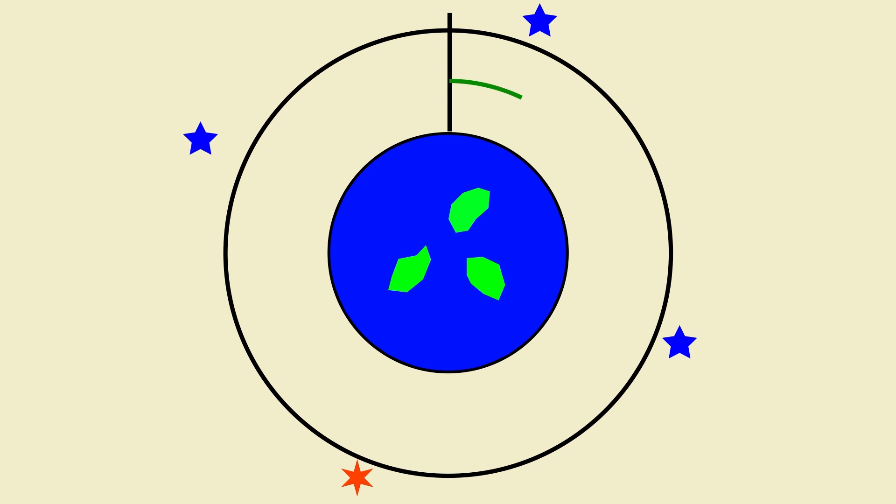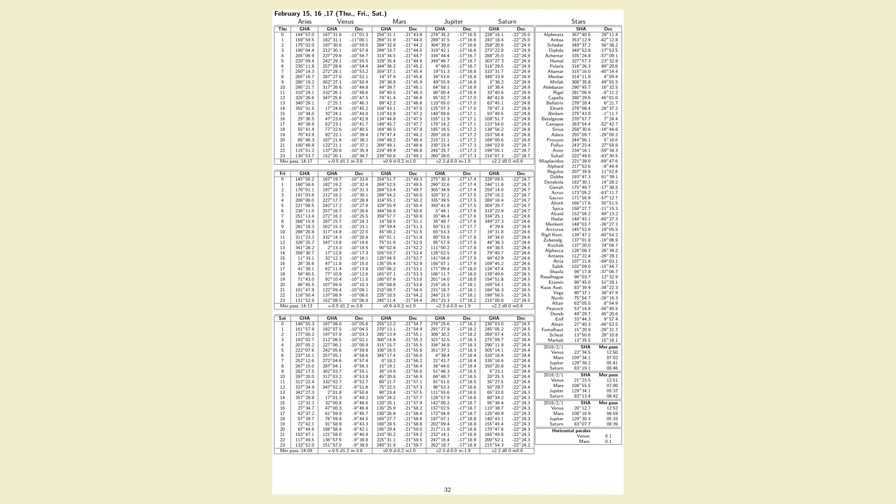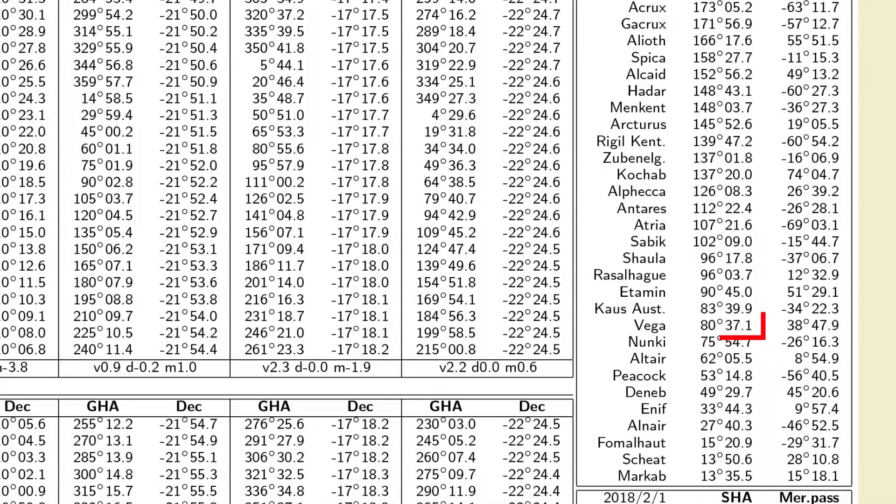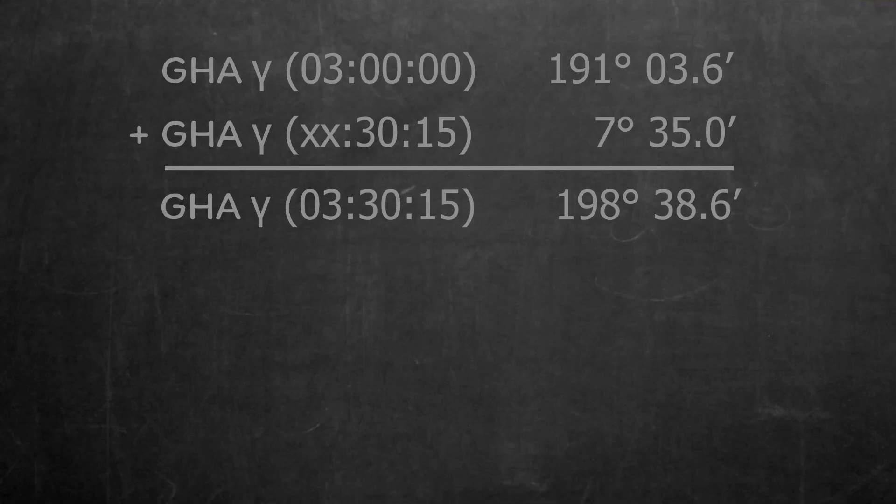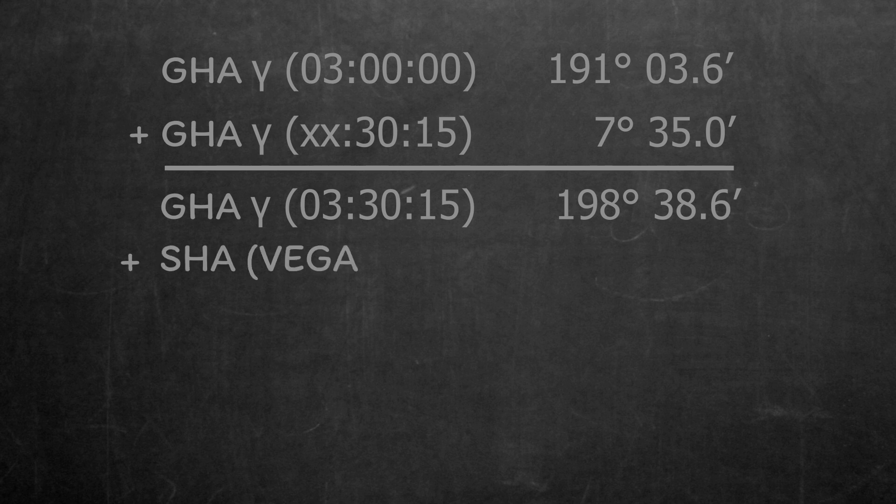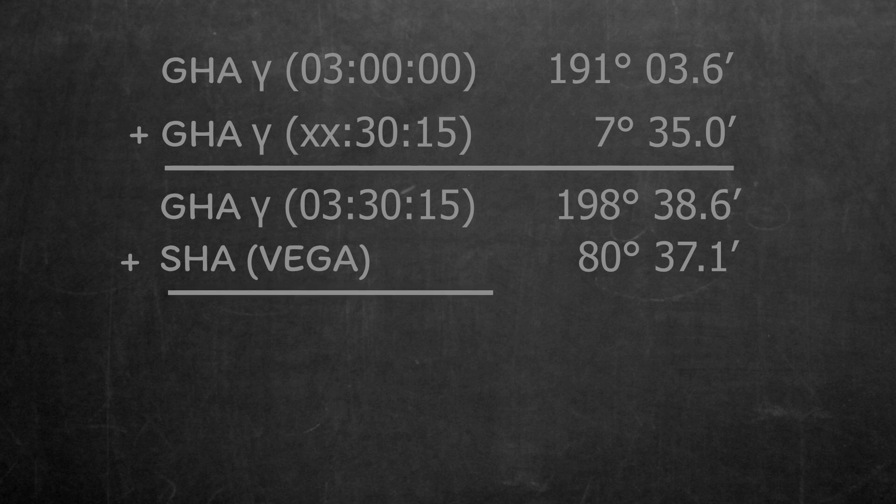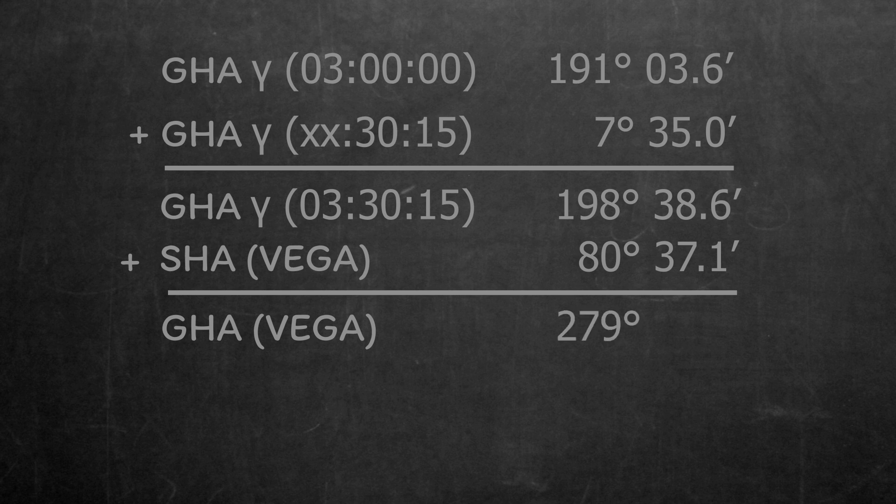So let's have a look at our star. We find the sidereal hour angle of Vega is 80 degrees, 37.1 minutes. To find the Greenwich Hour Angle of Vega at 03.30.15, we add the sidereal hour angle to the Greenwich Hour Angle of Aries at our time, which we already calculated as 198 degrees, 38.6 minutes. And we find the Greenwich Hour Angle of Vega is 279 degrees, 15.7 minutes.